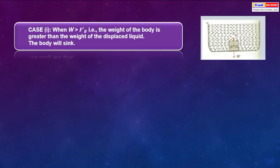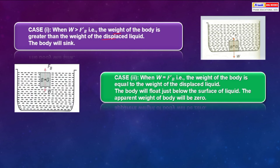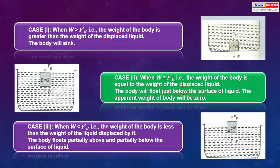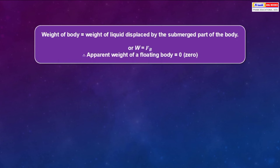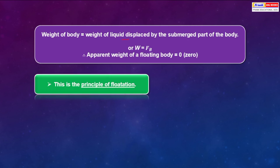Case 1: when weight is greater than the buoyant force, the body will sink. Case 2: when the weight of the body equals the weight of displaced liquid, the body floats just below the surface of the liquid and the apparent weight is zero — this happens with light wood. Case 3: when the weight of the body is less than the weight of displaced liquid, the body floats partially above and partially below the surface, as with cork. The apparent weight of a floating body is zero — this is called the principle of flotation.